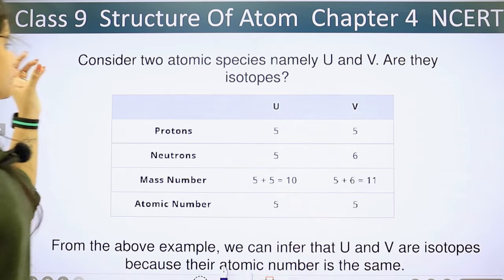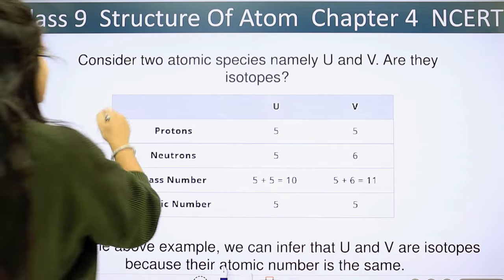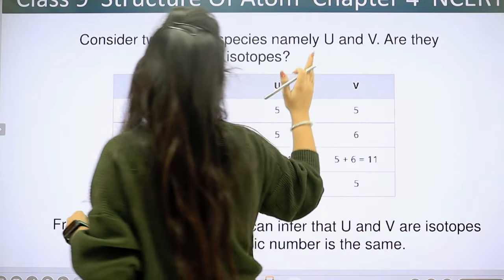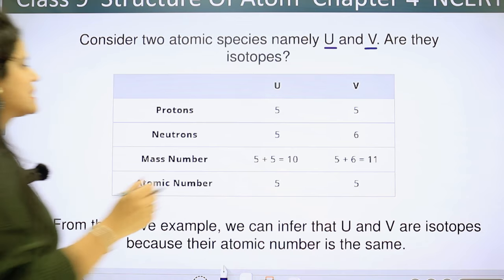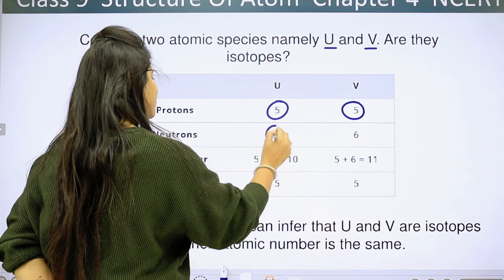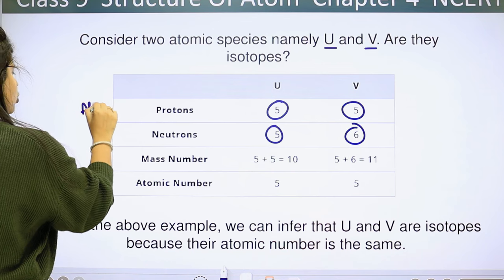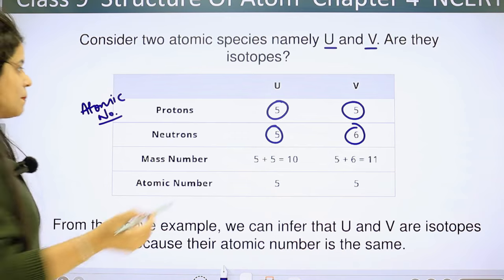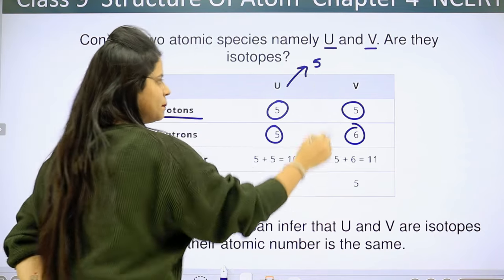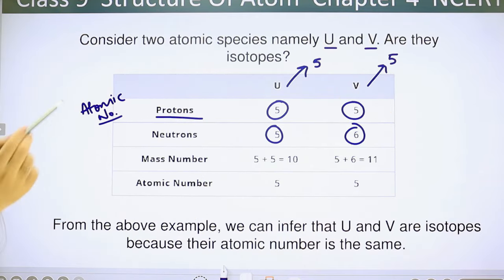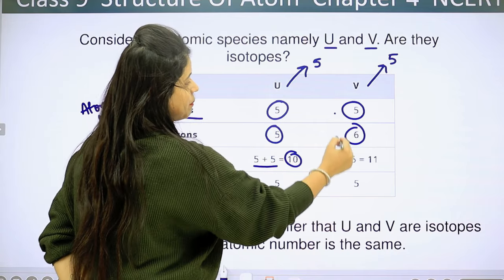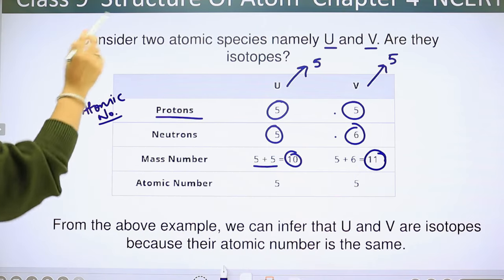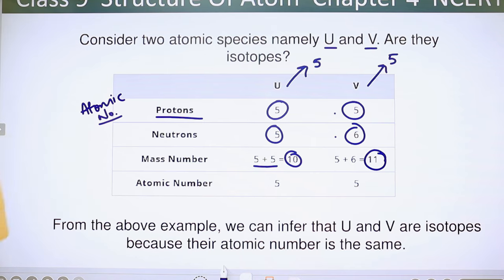Let's look at an example. Consider two atomic species, namely U and V. Are they isotopes? U has 5 protons and 5 neutrons. V has 5 protons and 6 neutrons. Since the number of protons is the same, the atomic number for both U and V is 5. But their mass numbers are different: 5 plus 5 is 10 for U, and 5 plus 6 is 11 for V. Since the atomic number is the same but mass number is different, U and V are isotopes.